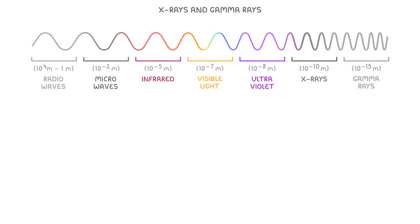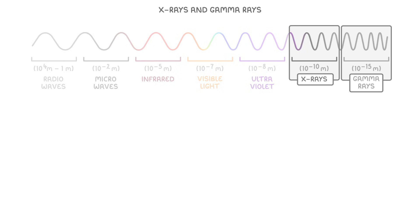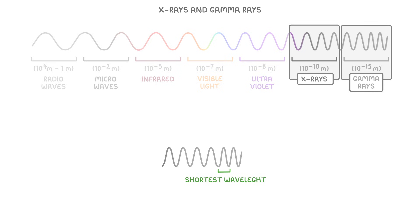In today's video, we're going to look at the uses of X-rays and gamma rays, which have the shortest wavelength and the highest frequency of all the electromagnetic waves.